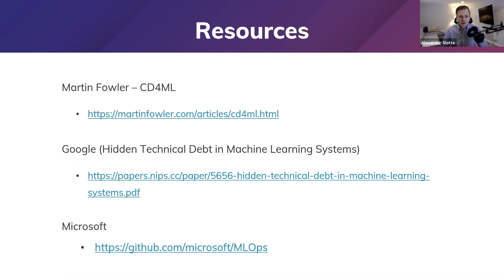If you're curious to follow up on some of these things afterwards, there are tons of great articles out there, especially from Google's research department. The three resources I would suggest: first is Martin Fowler's article named CD4ML, which stands for Continuous Delivery for Machine Learning — he and ThoughtWorks have put together some really good thoughts and experiments in this area. Google did a good one on hidden technical debt in machine learning systems that I recommend. And Microsoft has a lot of content on this area as well.